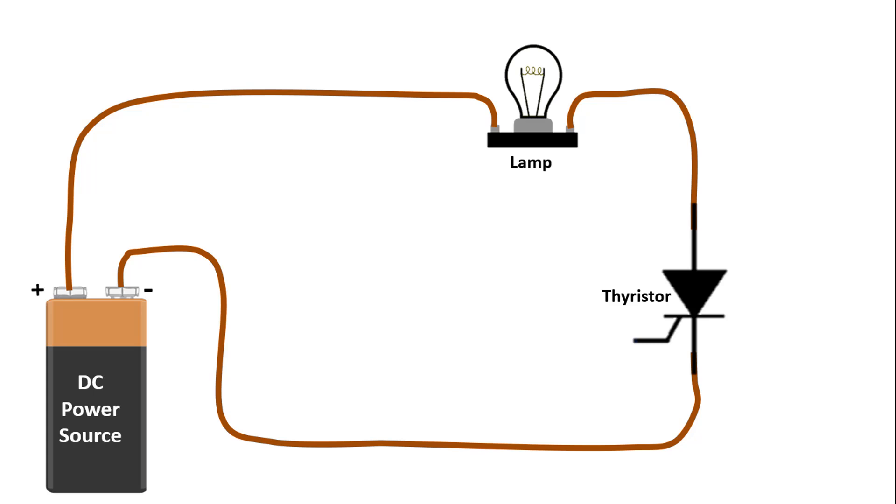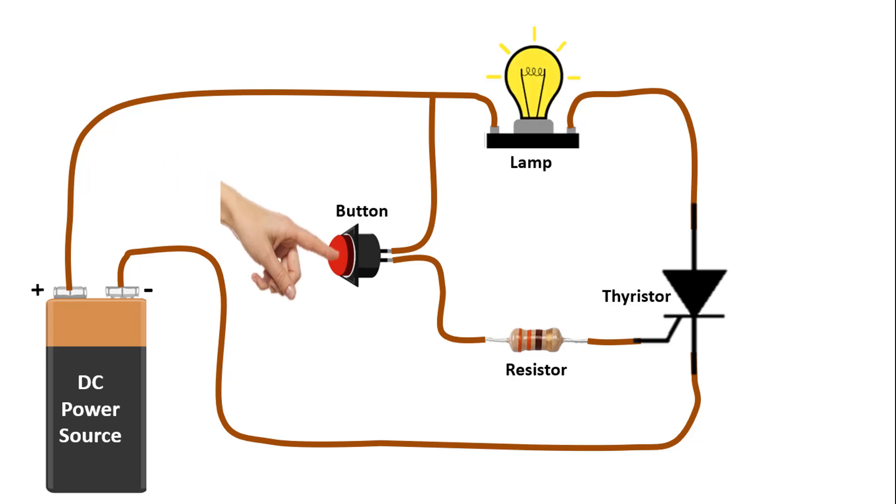A low trigger current must come from the gate pin to trigger the thyristor. By making a connection to the gate pin in this way, we can make the thyristor triggered. When we press the button here, the thyristor will be triggered and the current flow will be provided from the anode to the cathode. Thus, the lamp will light up.